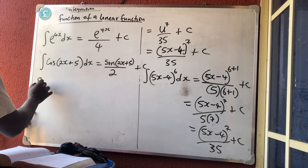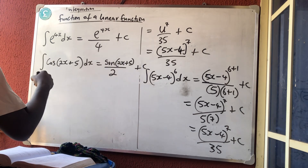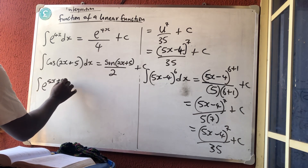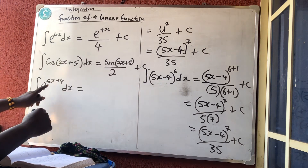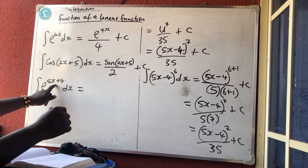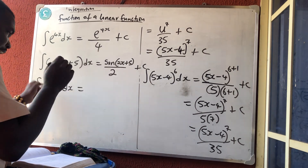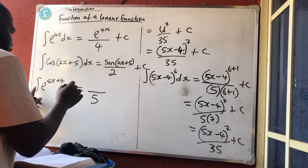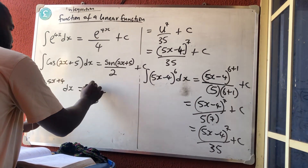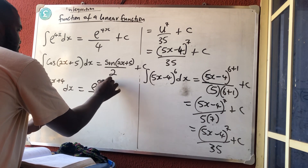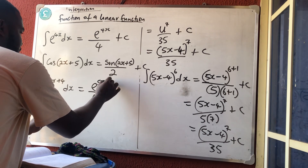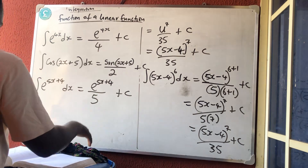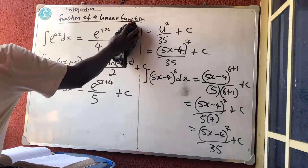Next: the integral of e raised to power (5x + 4) dx. It is a linear, so differentiate the bracket: we get 5, which we keep at the denominator. The integration of e raised to a power is e raised to that same power — (5x + 4) — it doesn't change, plus a constant.